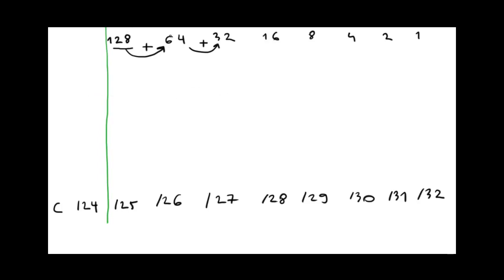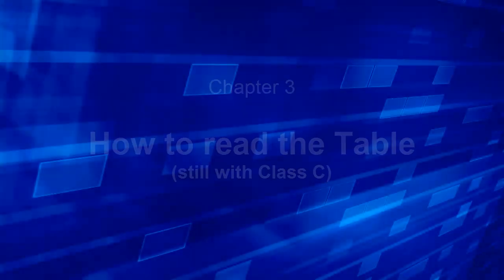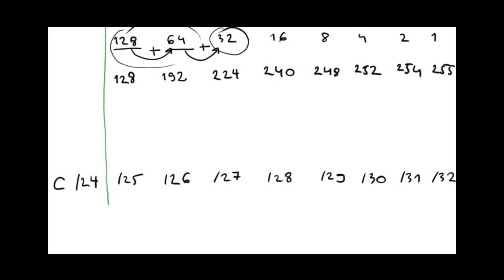These values will be sums of the following values from the octet bits. Working across: 252 plus 2 is 254, and 254 plus 1 is 255.